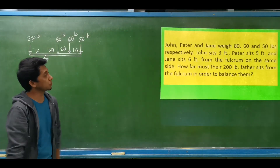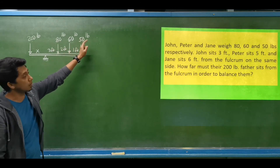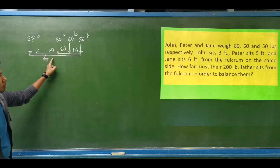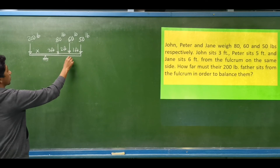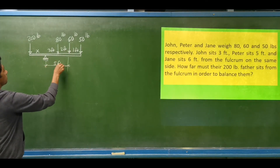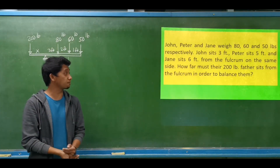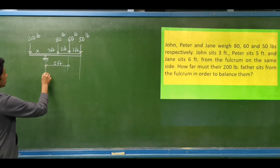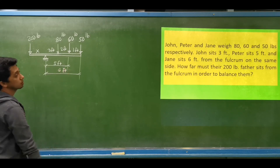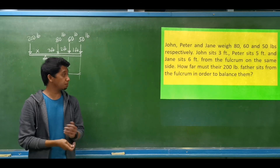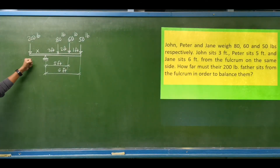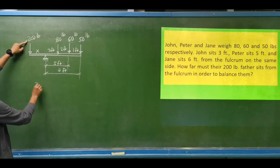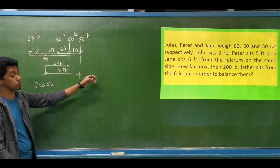Next example: John, Peter, and Jane weigh 80 pounds, 60 pounds, and 50 pounds respectively. John sits 3 feet from the fulcrum, Peter sits 5 feet from the fulcrum, and Jane sits 6 feet from the fulcrum. How far must their 200-pound father sit from the fulcrum on the other side in order to balance them?